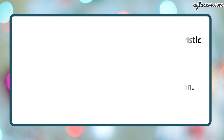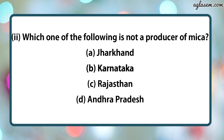Second part says: which one of the following is not a producer of mica? Options: (1) Jharkhand, (2) Karnataka, (3) Rajasthan, (4) Andhra Pradesh. The answer is B, that is Karnataka.